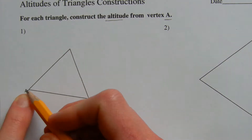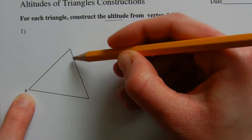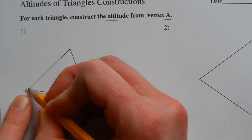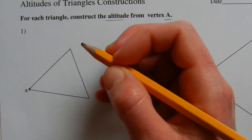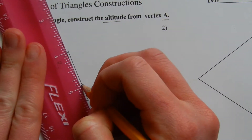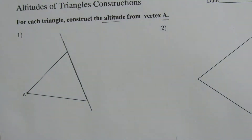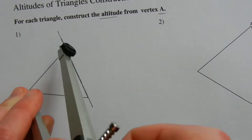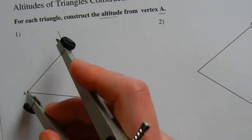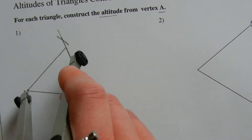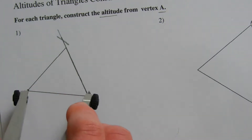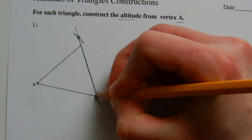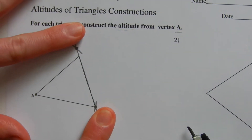For number one, we have to find a line that's perpendicular to the opposite segment that goes through point A or vertex A. In order to do that, let me extend this opposite side so we have a little more room to work. Now I'm going to take my compass, place it on vertex A, and extend out so that I can intersect the line at one point and then move my compass around to intersect it at another point.